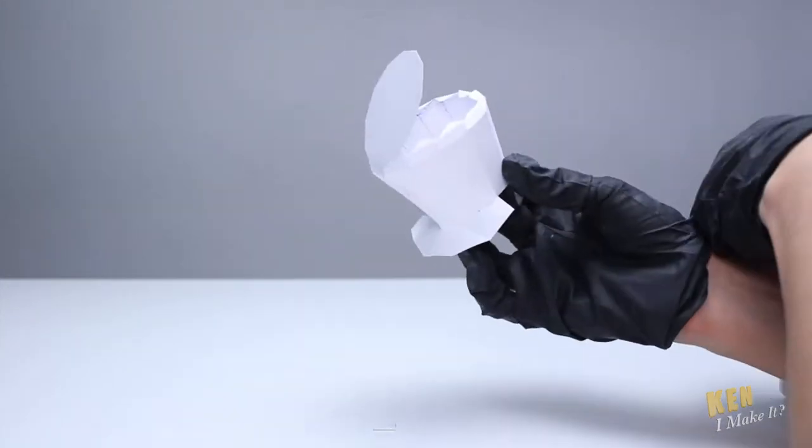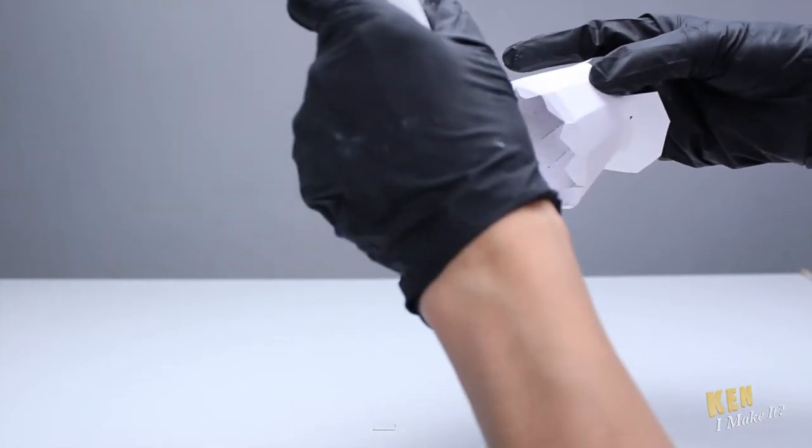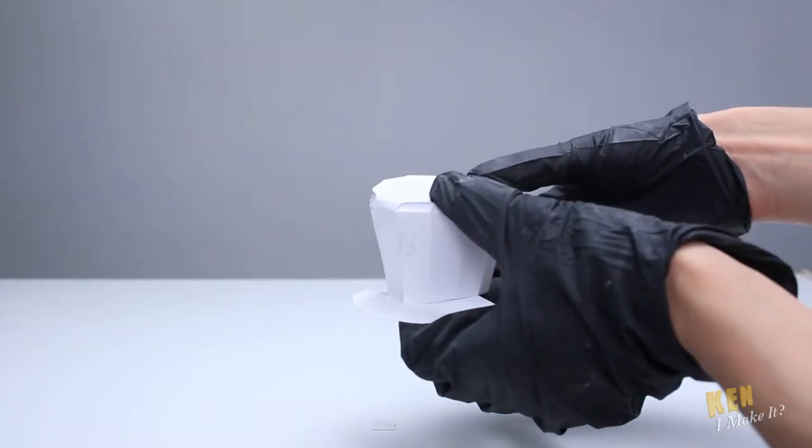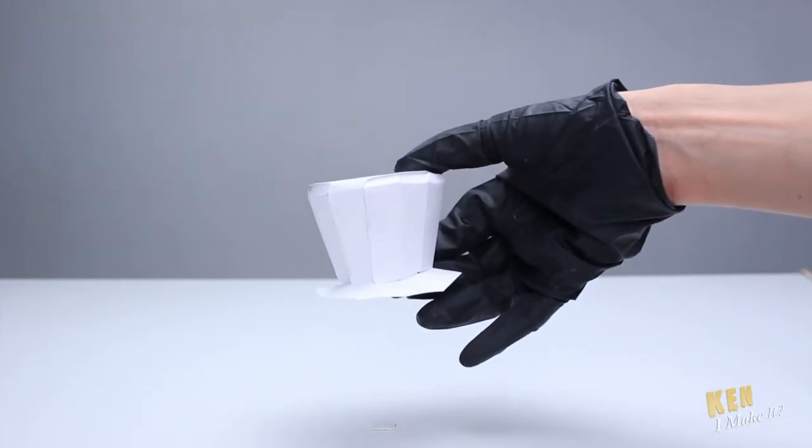All right, now here you see me gluing the top hat together. I only made the rim of the hat go halfway around since my dog has giant bat ears. I don't want him to bend his ears just to wear the hat.